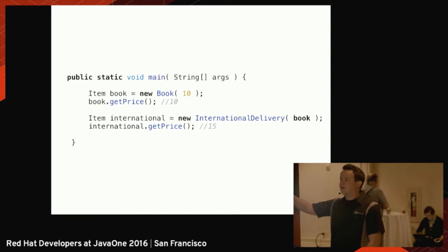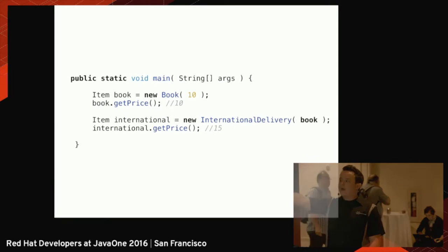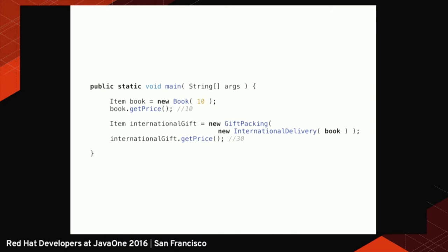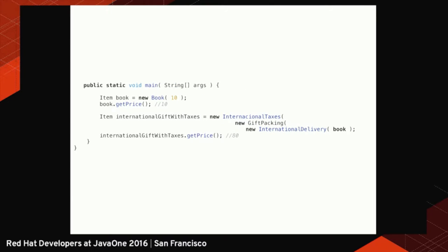It's important to note that ItemExtras is also an Item, so you can combine these decorators and chain them together. I create a book with price 10. When I decorate with international delivery, the price becomes 15. If I add gift packing on top of international delivery, I get a chain resulting in 13 more. I can keep building that chain for more behavior. But again, I have to pay the trade-off of creating this type hierarchy to solve my problem.